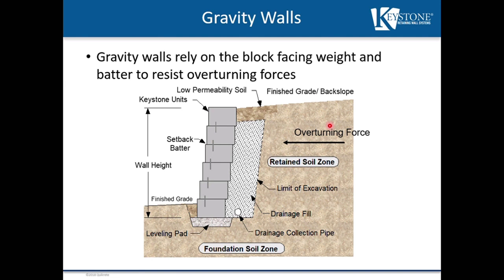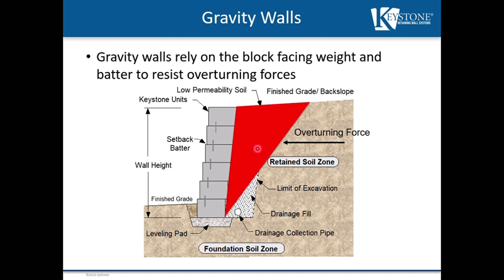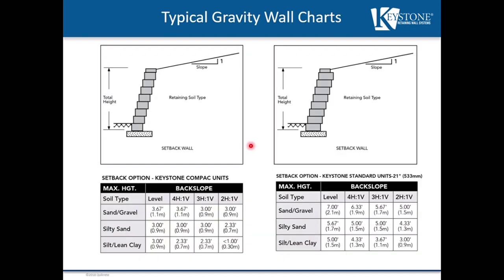Gravity walls rely on the block facing weight and batter to resist the overturning forces. Based on the soil friction angle, a wedge of soil develops and tries to slide down the failure surface to push the wall over. If we have a silt or clay material, the load is going to be higher because it has less friction angle. So based on the load of the soil and the load above the wall, we determine what block facing we can use — looking at the weight and setback of the block to determine if it can resist the overturning forces. Gravity wall charts are available for all block types to give guidance on what block to choose for a specific application.